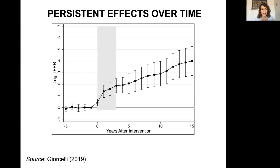The results show that management has a persistent effect on firm productivity over time. Specifically, treatment and control firms appear very similar in the five years before the program started. Then firms in the treatment group began taking off in the intervention year, with a stable increase up to 15 years after the program. This indicates that management interventions are successful and can persist over time, and this can explain why managerial practices spreads are so strongly correlated with productivity spreads across countries.